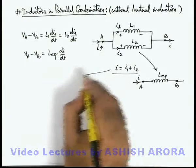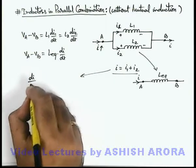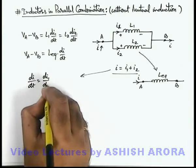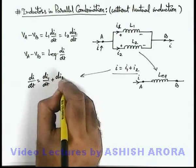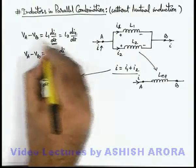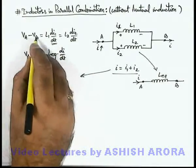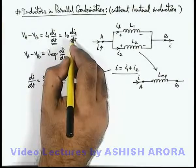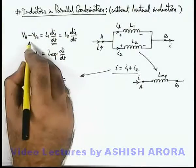Now from this relation we can write di/dt is equal to di1/dt plus di2/dt. Now in this situation, di1/dt we can write as VA minus VB over L1, and di2/dt we can write VA minus VB by L2.